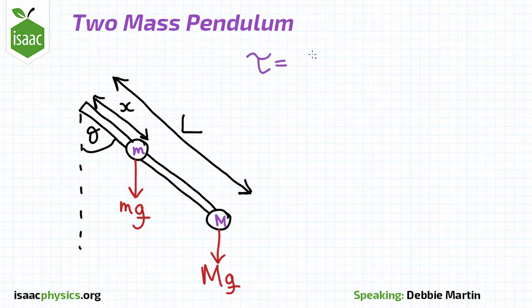The total torque about this axis is equal to the moment of inertia of the system times by the angular acceleration theta double dot.